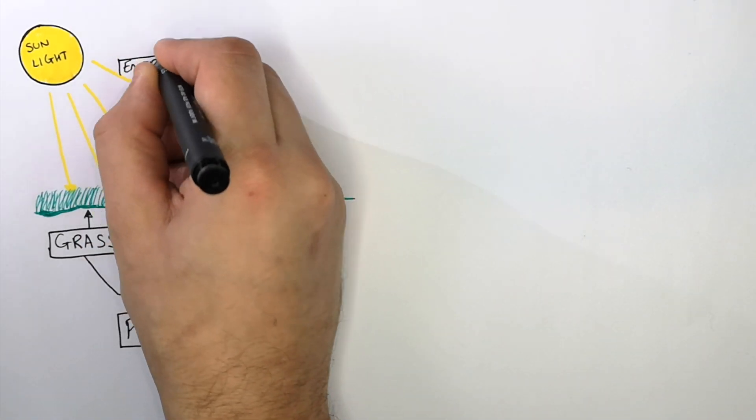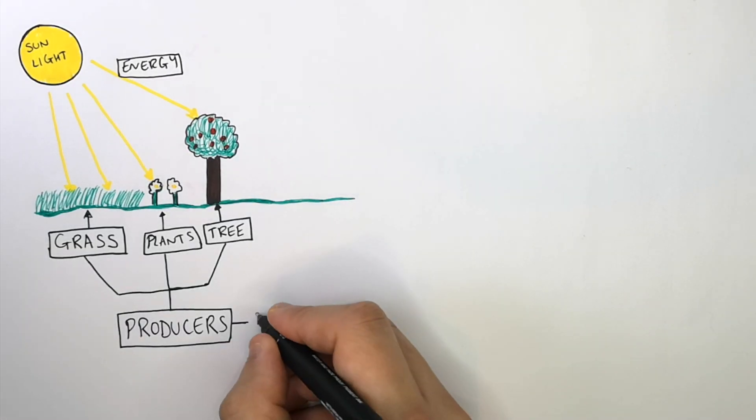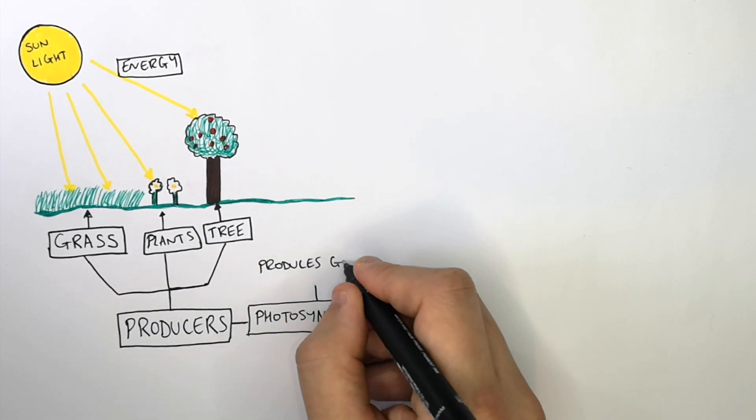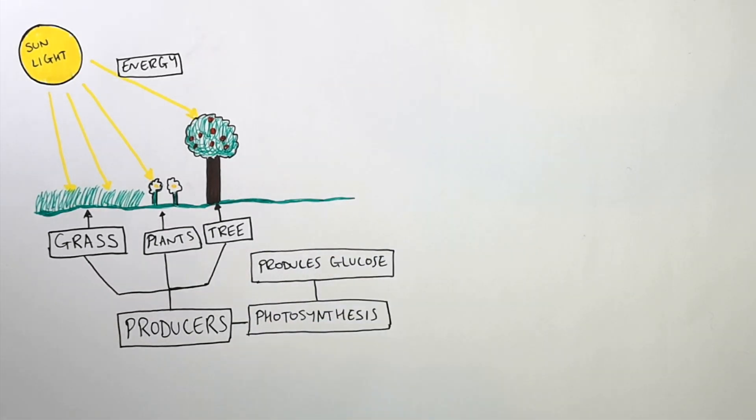And these producers use the energy from the sun for photosynthesis which produces the sugar glucose in plants. So photosynthesis is when carbon dioxide reacts with water using the light energy from the sun to produce oxygen as a by-product and glucose, a sugar that the plant uses for respiration.